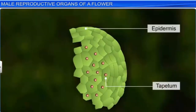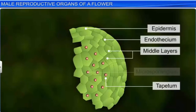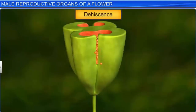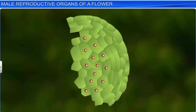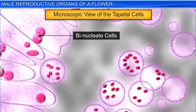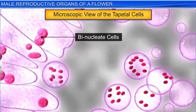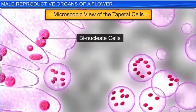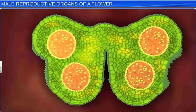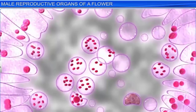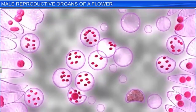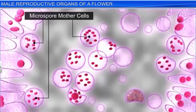The epidermis, endothecium, and middle layers protect the microsporangium, as well as aid in dehiscence — which is the splitting of the anther walls that causes the release of pollen grains. While the tapetum, whose binucleate cells possess dense cytoplasm, nourishes the developing pollen grains. The sporogenous tissue consists of a group of compactly arranged homogenous diploid cells called microspore mother cells or pollen mother cells.